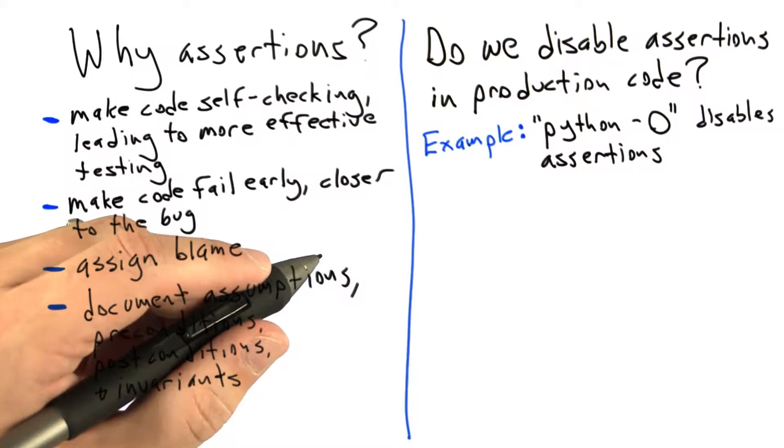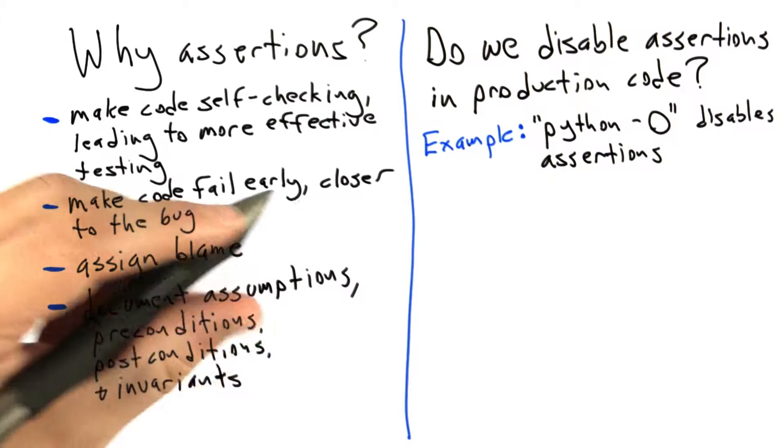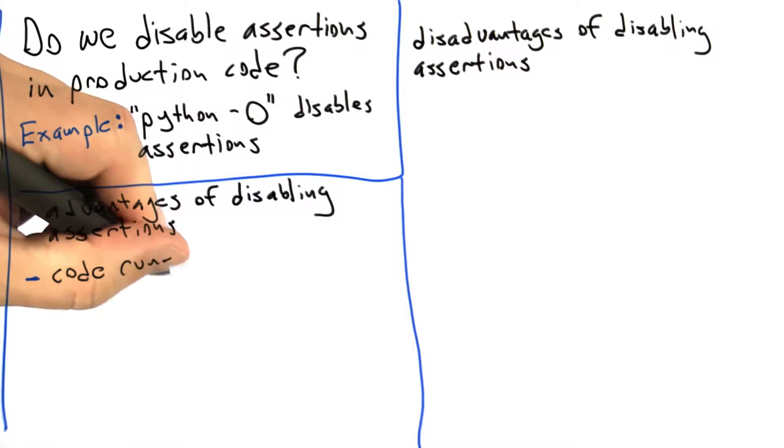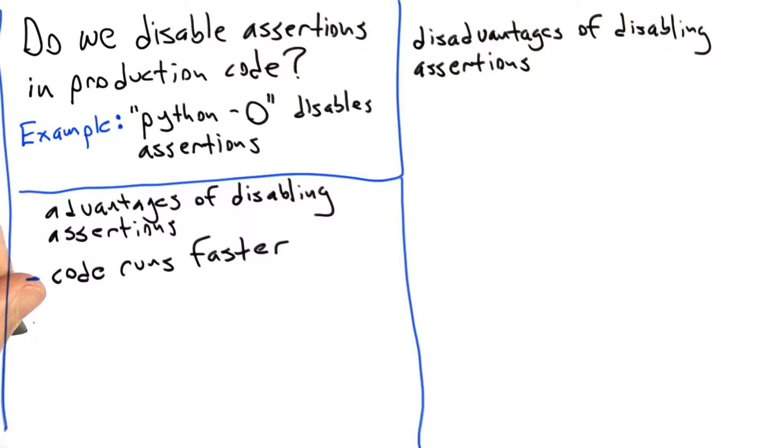So let's first look at reasons why we might want to disable assertions. One of the main advantages of disabling assertions would be that it lets our code run faster. Another advantage, and here we're starting to get into something which really depends on what we're trying to do with our system,